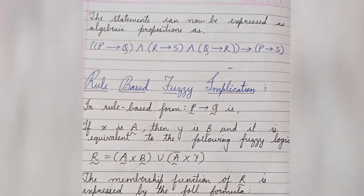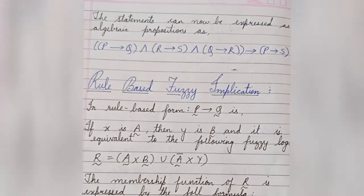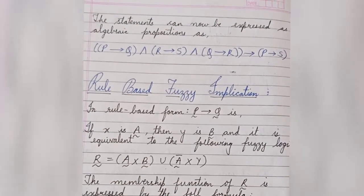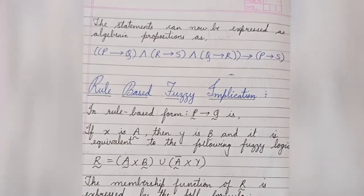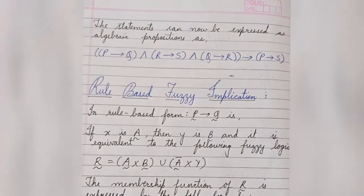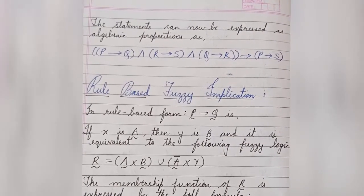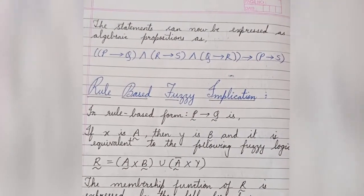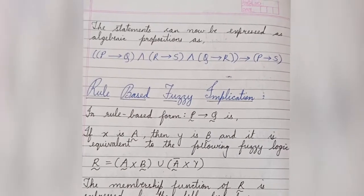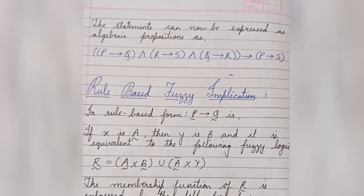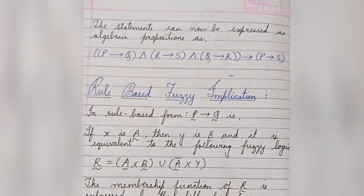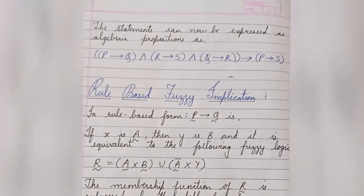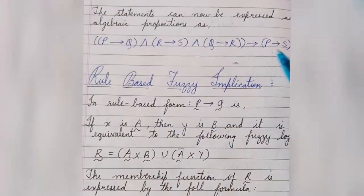A fuzzy logic proposition P is a statement involving some concept without clearly defined boundaries. Linguistic statements that tend to express subjective ideas and that can be interpreted slightly differently by various individuals involve fuzzy propositions.